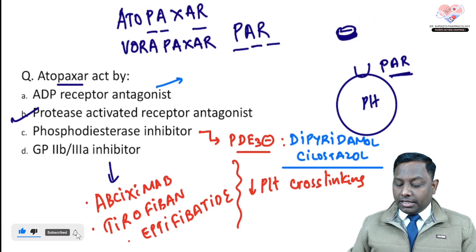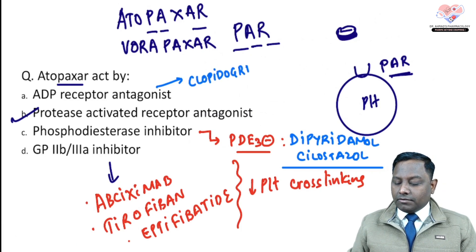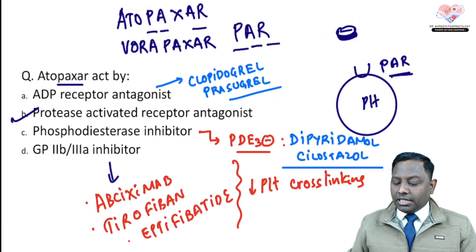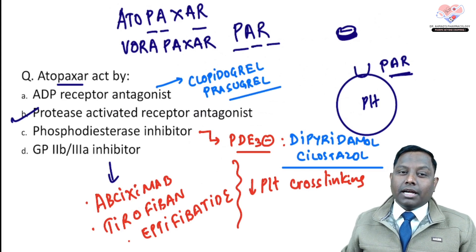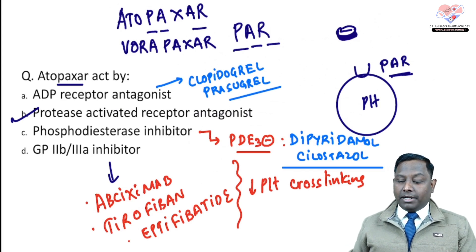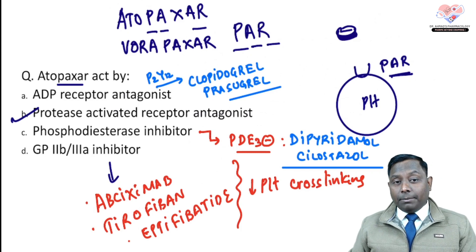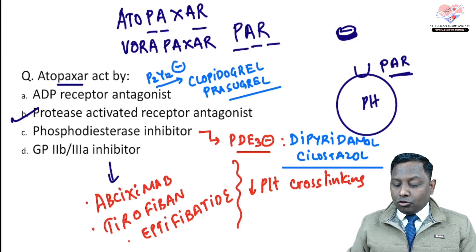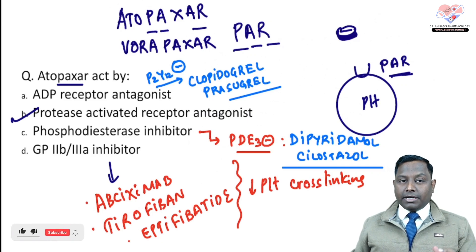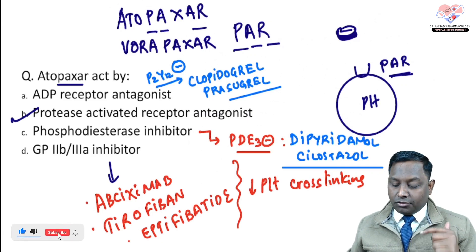ADP receptor antagonists include Clopidogrel and Prasugrel, which are irreversible inhibitors. Cangrelor and Ticagrelor are reversible ADP inhibitors. ADP receptor is the P2Y receptor, so ADP receptor inhibitors are also called P2Y12 inhibitors — that includes Clopidogrel and Prasugrel.